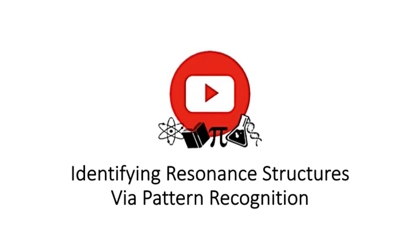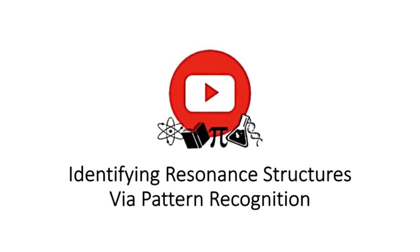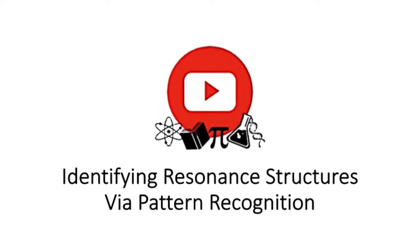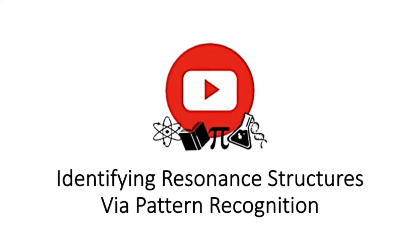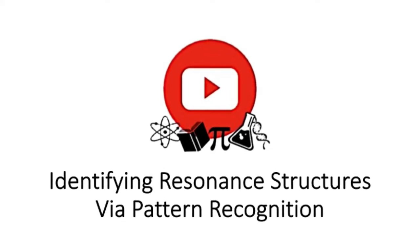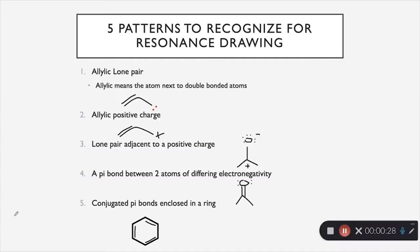In this video we are going to be talking about resonance via pattern recognition, and then once we figure out those patterns and how to push the arrows, we then have to assess the importance and figure out which ones are the best resonance structures of the molecule that we're looking at. Here are the five patterns we are going to use to recognize resonance in molecules. These five patterns will be applicable for any molecule you look at.